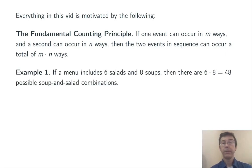Here's an example. A menu includes six salads and eight soups. How many soup and salad combinations are possible? The idea is, first we pick a salad, there's six possibilities there, and then for each of those six choices, there's eight possible soups. So we end up with six groups of eight, six times eight, or 48 total possible combinations.